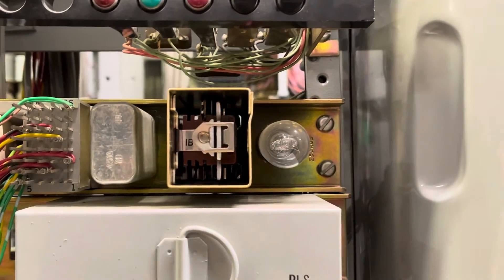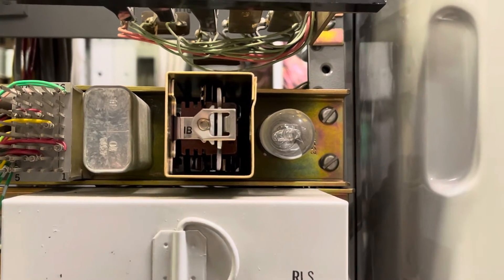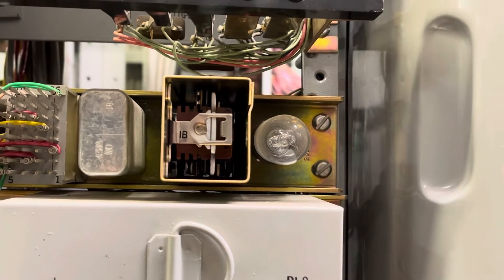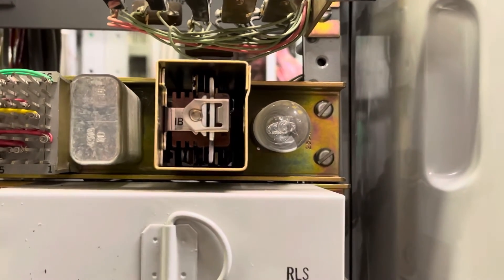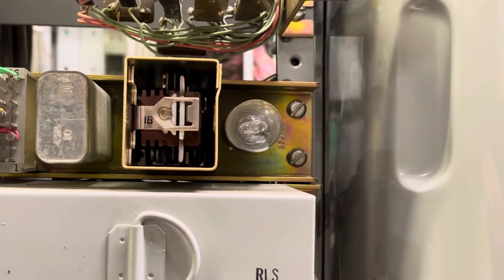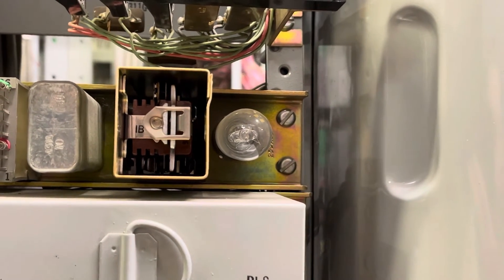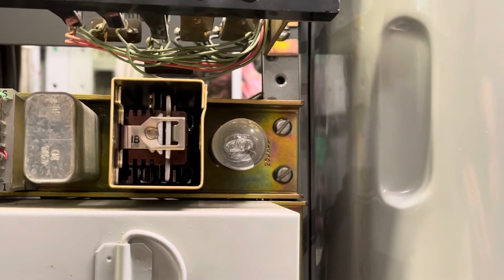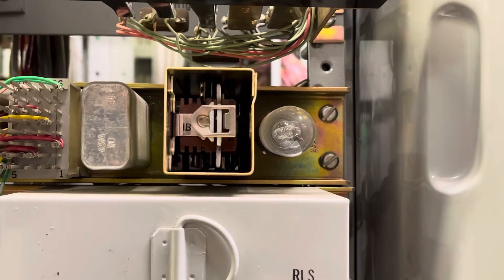Every connector shelf in a central office will have what's called an Intercept Busy Relay. The purpose of that Intercept Busy Relay is to not allow any other connectors on this shelf to cut into the recording until either the person that's listening to the recording hangs up, or if there was a timeout circuit that I don't have, would time it out.